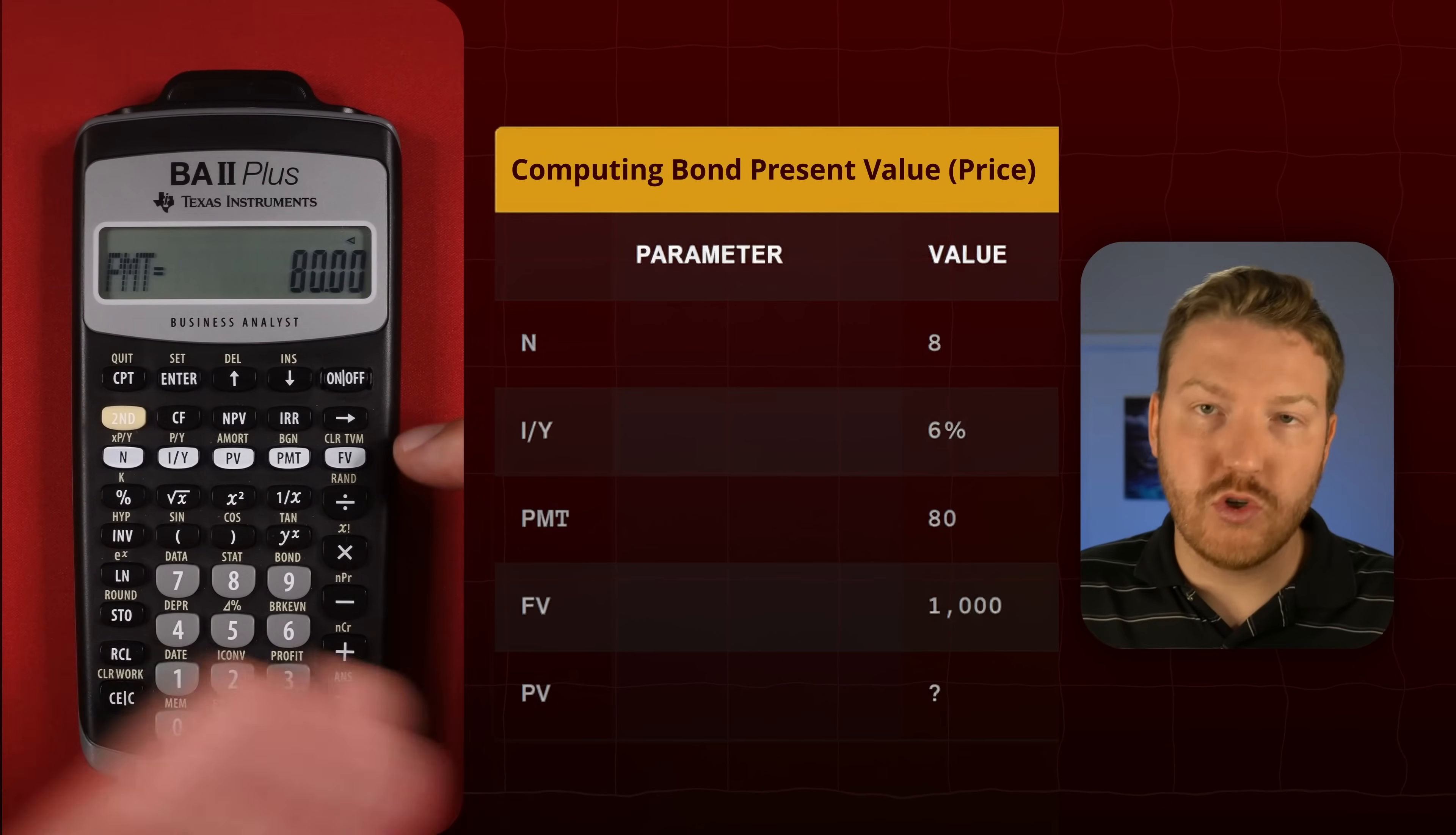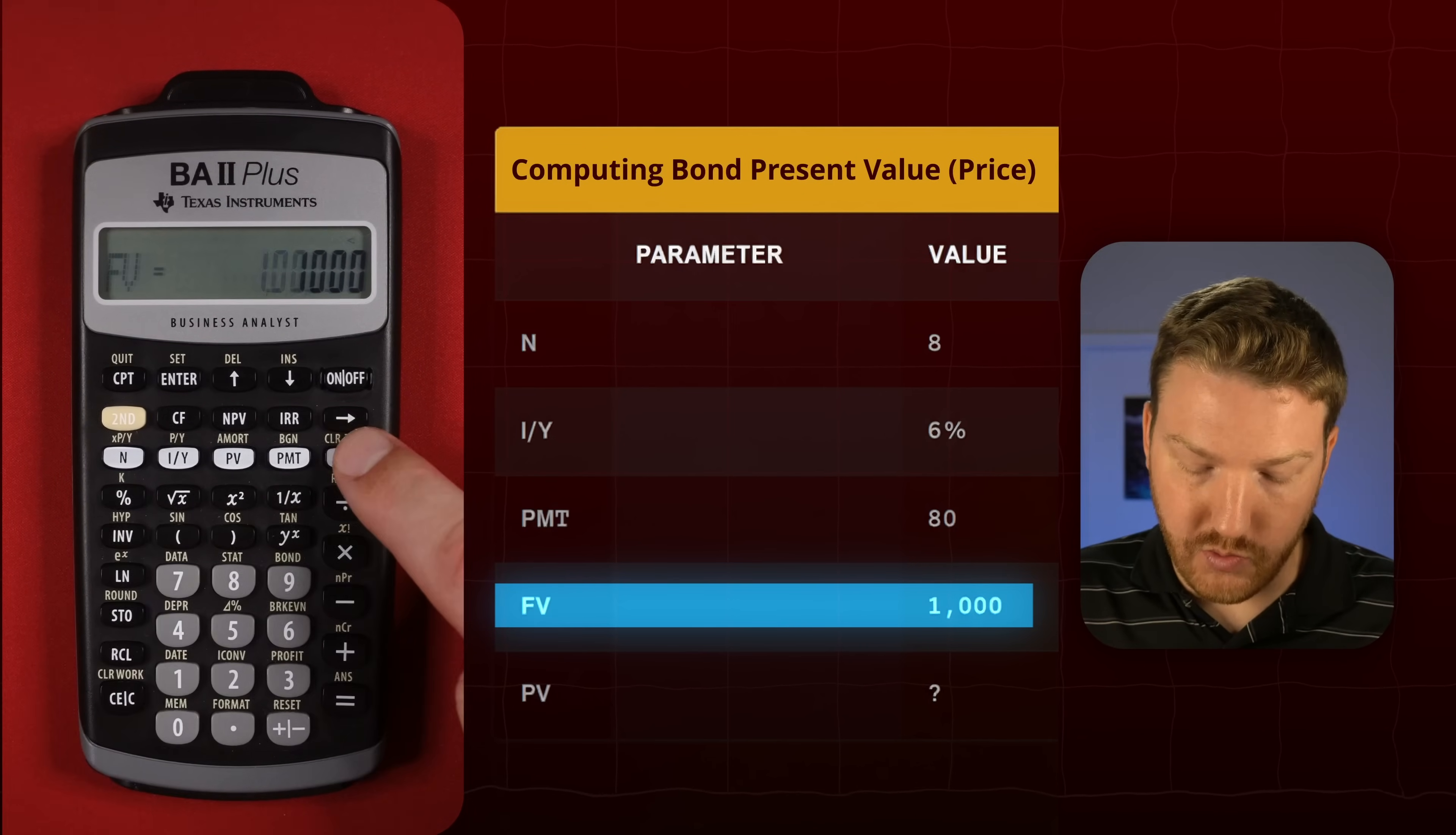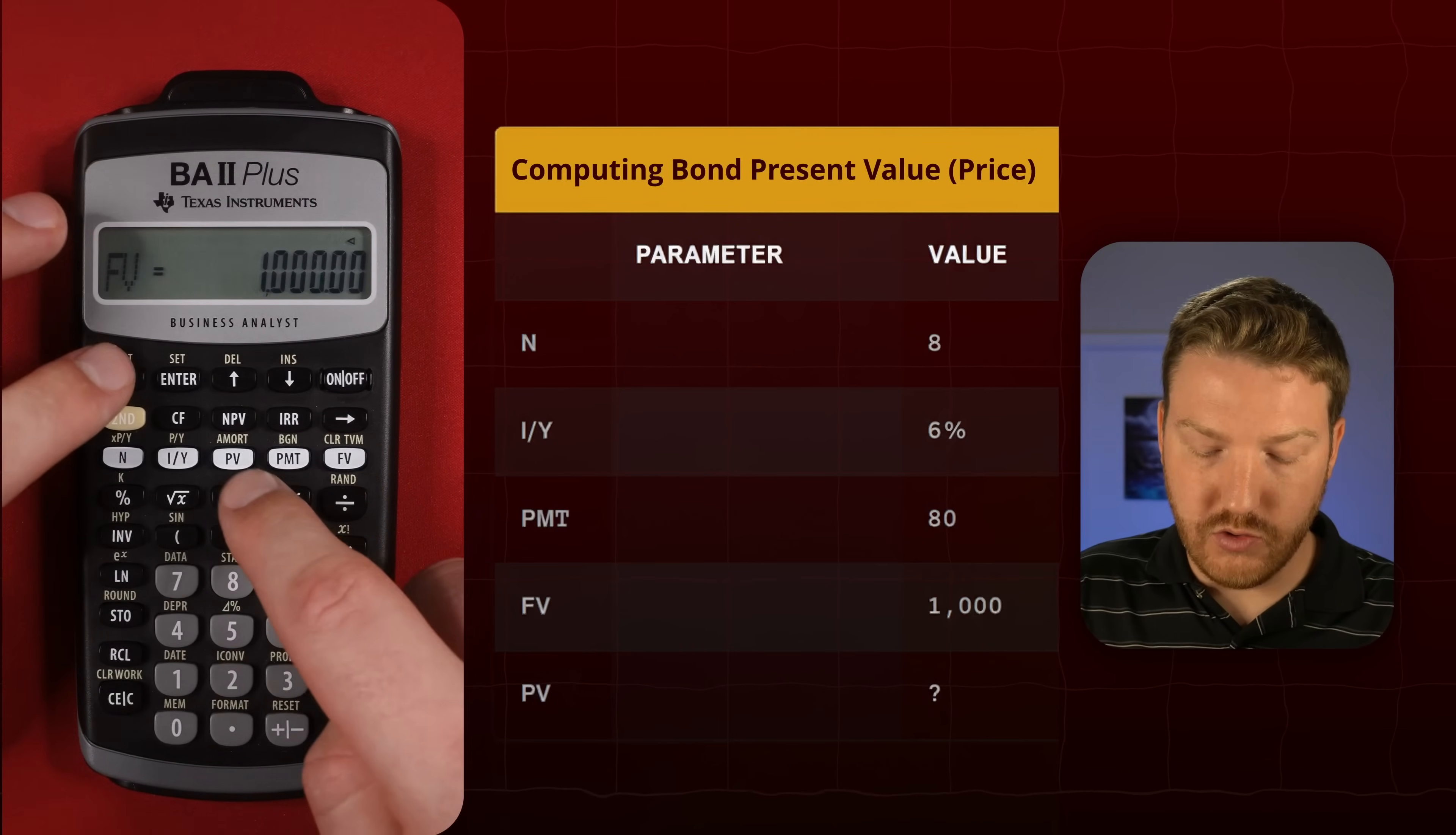So let's say the future value, or the notional that the bond pays at the very end of its life, is one thousand, so one thousand FV. Now we can just compute for present value, and present value should be greater than the future value.